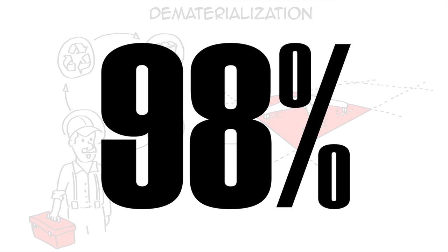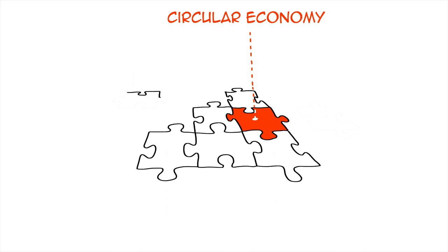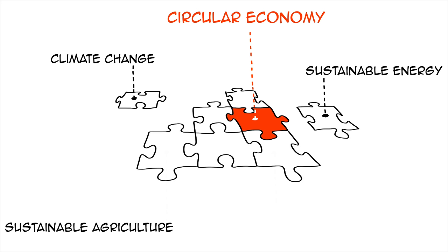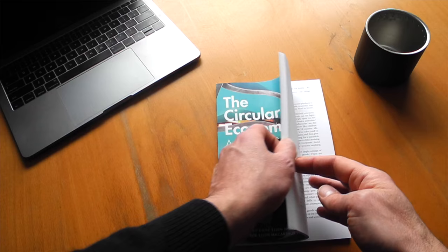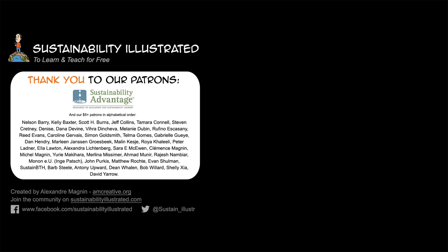Creating a circular economy is only one piece of the sustainability puzzle, and many other aspects have to be taken into account to get 100% sustainable: climate change, sustainable energy, sustainable agriculture, social sustainability, and more. As promised, here is a great book I recommend if you want to learn more — it is very well put together and talks about circular economy in the modern age. I will put a link in the description below. If you found this video useful, please like it, subscribe, and click the bell to be notified when we post new videos. You can help us make more videos to learn about sustainability for free by making a pledge on our Patreon page or by giving us a tip on our website sustainabilityillustrated.com. Thank you to all our patrons and I will see you in the next video.